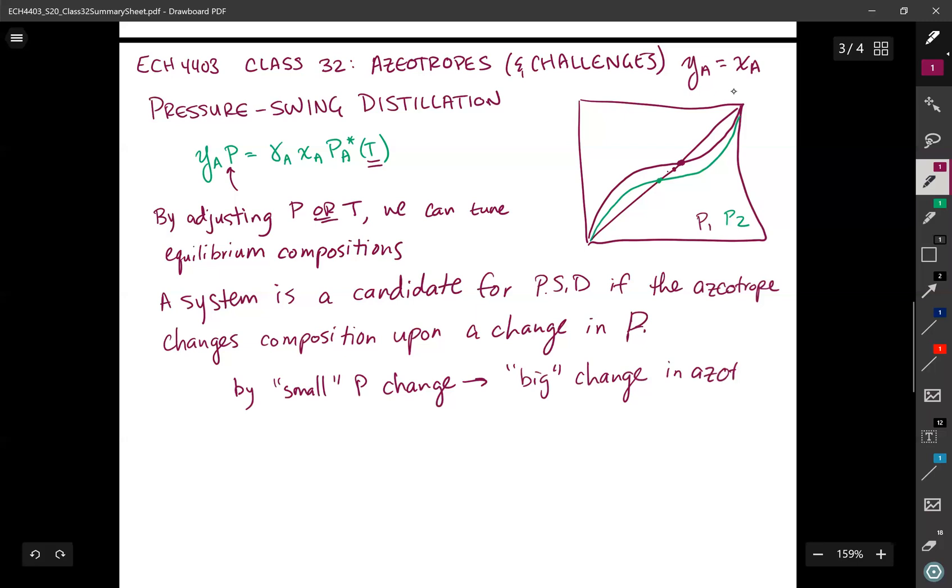I don't want to adjust the pressure by a lot to only move the azeotrope by a little, because that's still going to be costly. In the next video, I'll talk about what the general process flow diagram looks like for pressure swing distillation.